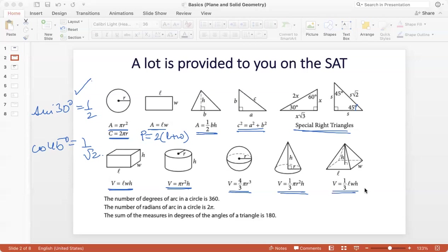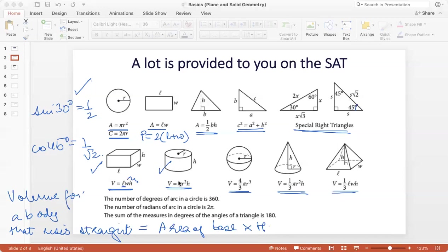Now there is one concept concerning volume that you should know. Volume for a body that rises straight is area of base multiplied by the height. What do I mean for a body that rises straight? It means that the height, the way the body rises is perpendicular to the base. For example, here or here. And in both cases, you can see that the area of the base is L into W into height is the volume. Here the area of the base is pi R squared into height is the volume.